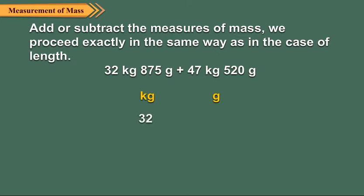We first write the given measures under their respective columns. Then, we add the grams. 875 grams plus 520 grams is equal to 1,395 gram.